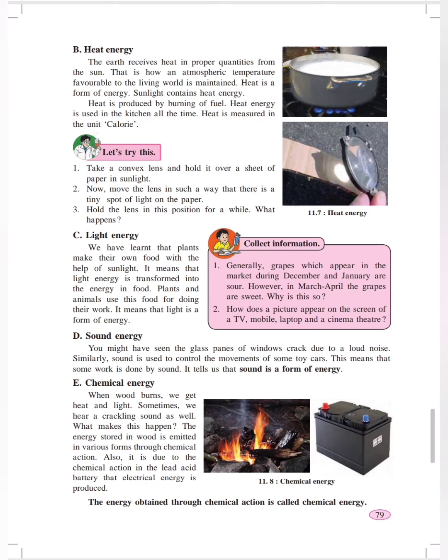The third one is light energy. We have learned that plants make their own food with the help of sunlight. It means that light energy is transformed into the energy in food. Plants and animals use this food for doing their work. It means that light is also a form of energy.